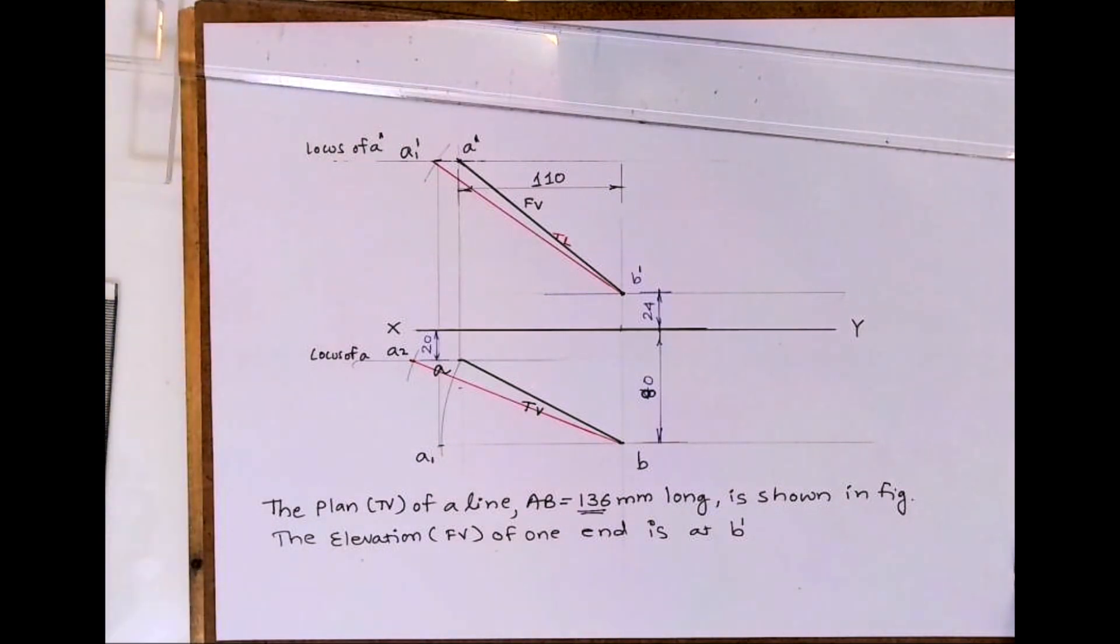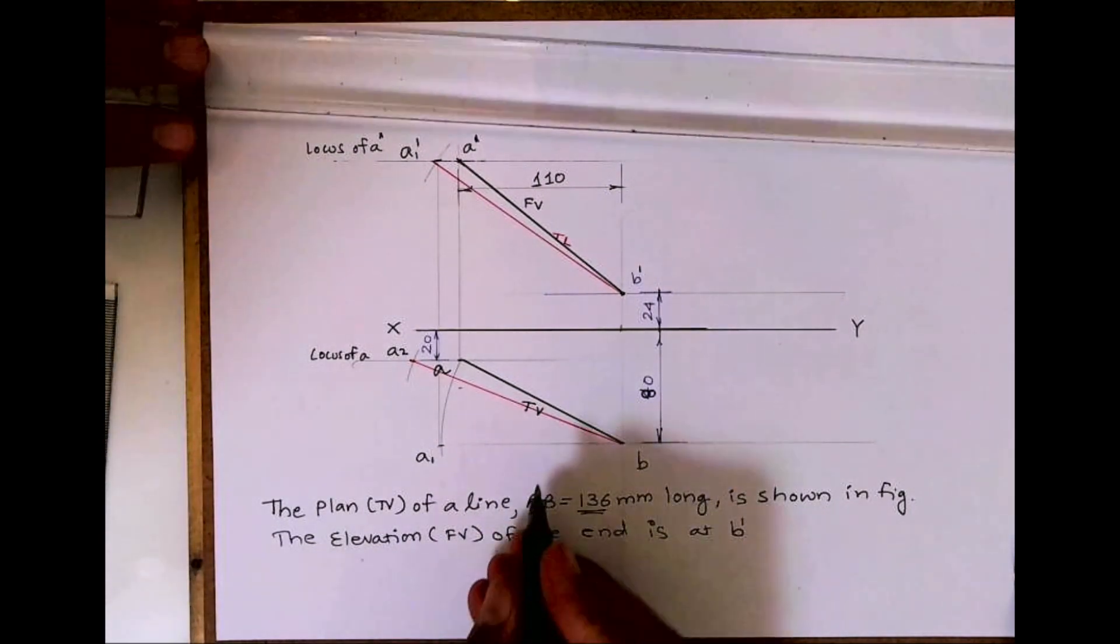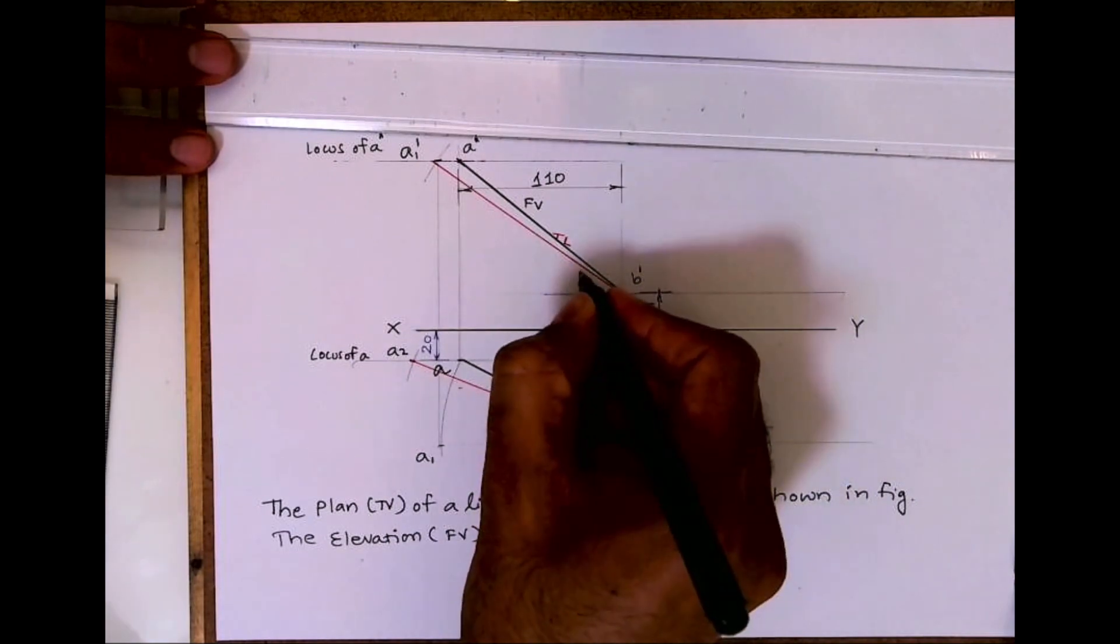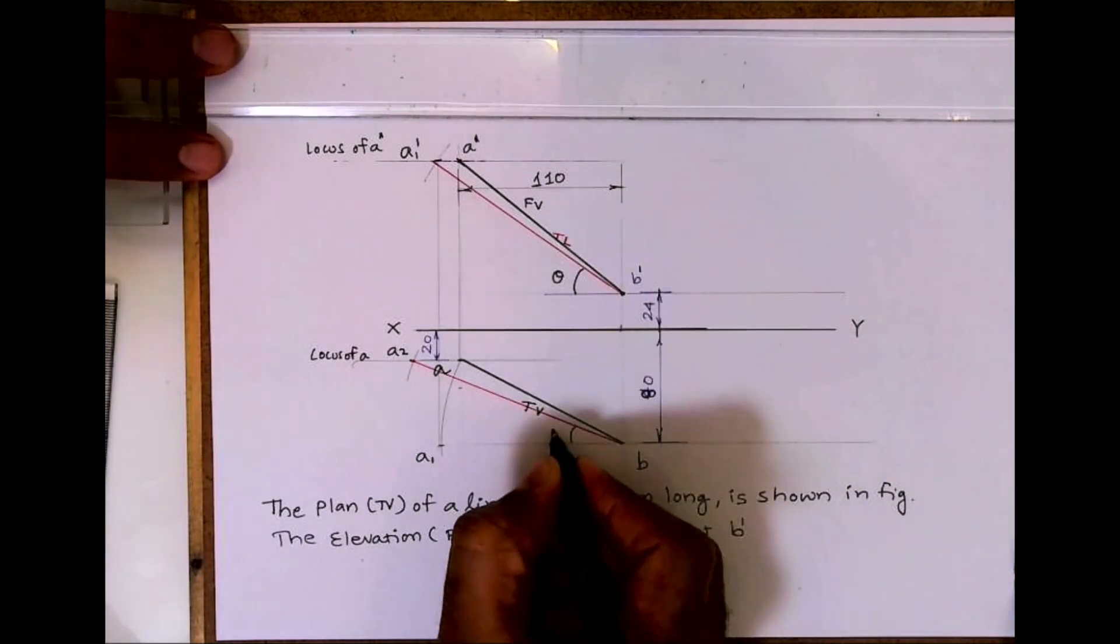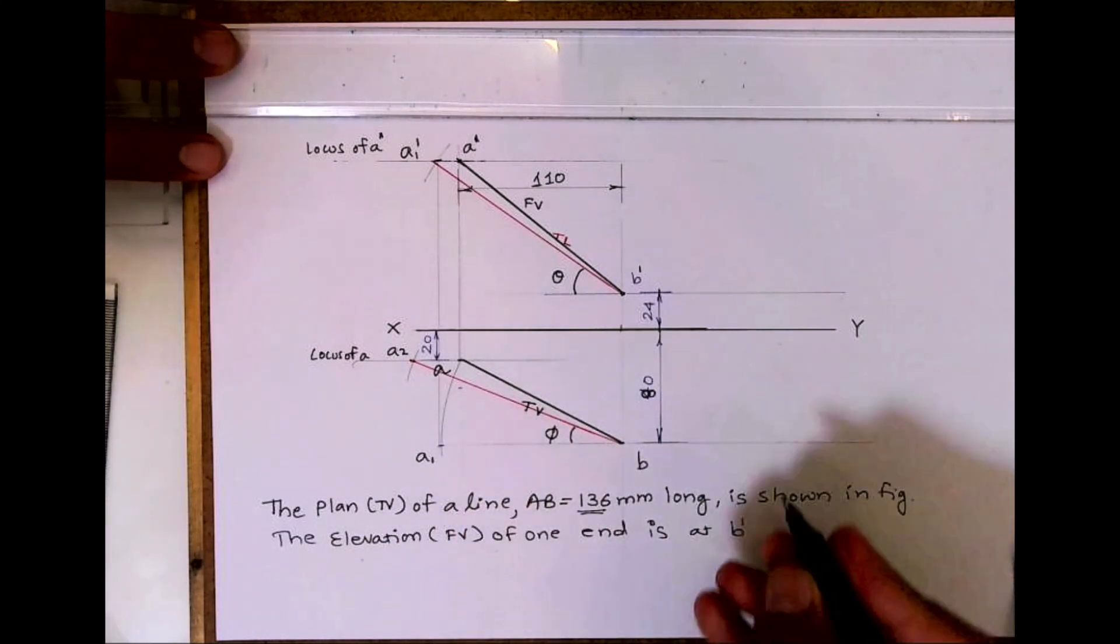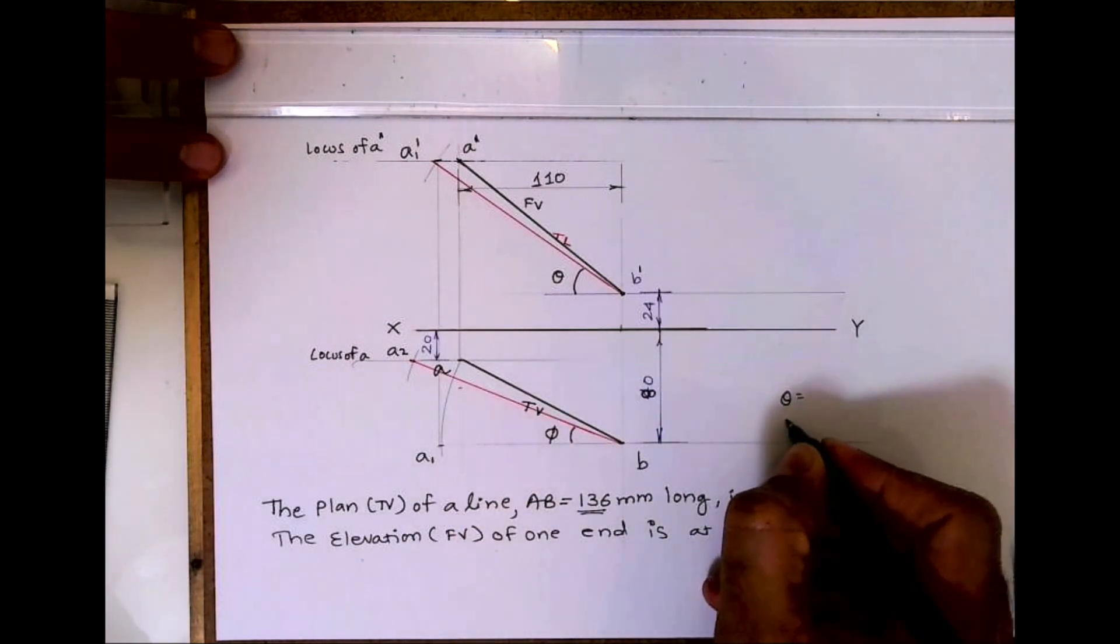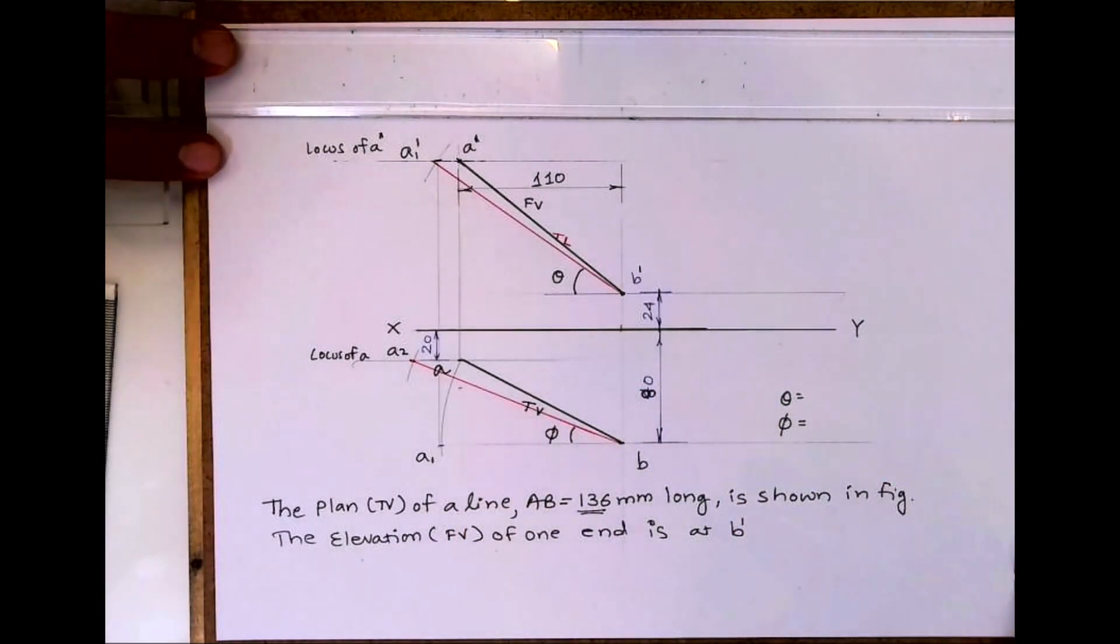Now we need to find out theta and phi. This is theta, inclination with HP. This is phi, inclination with VP. That you can find out.